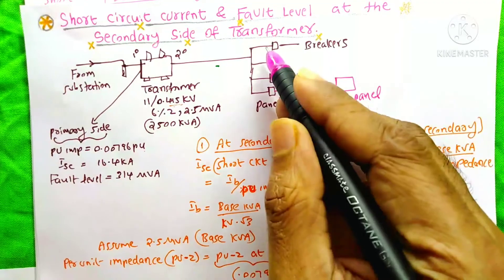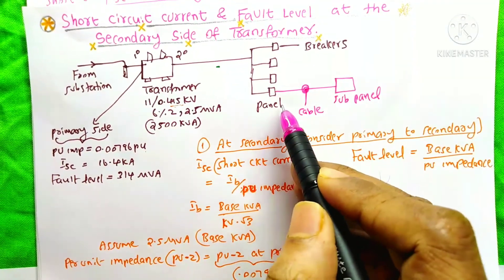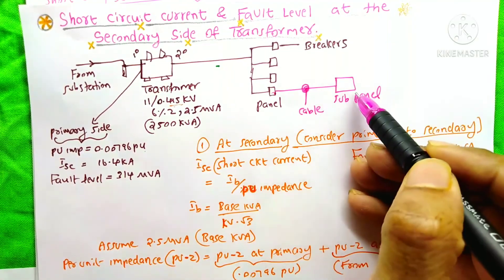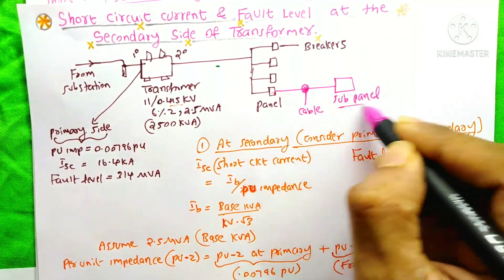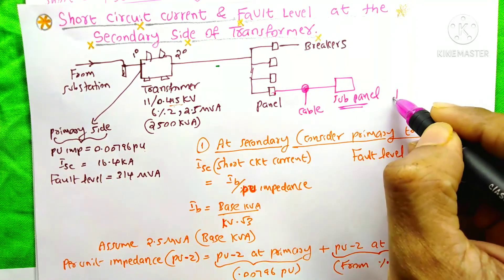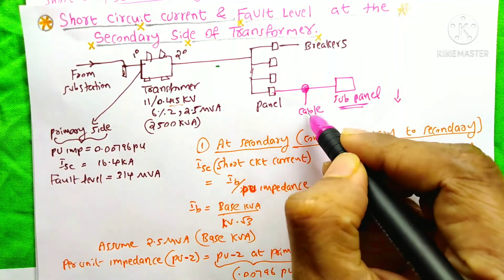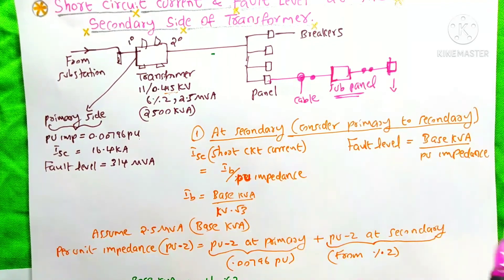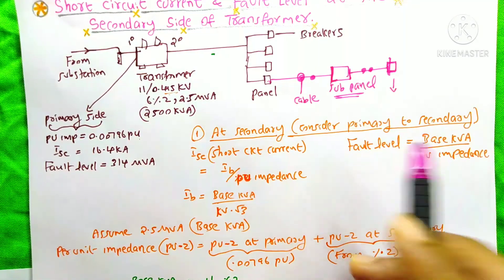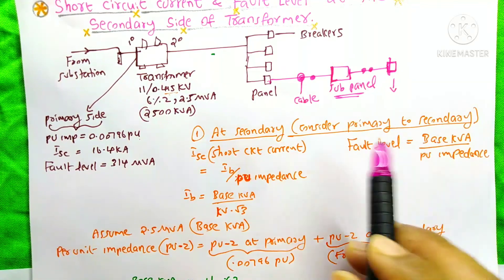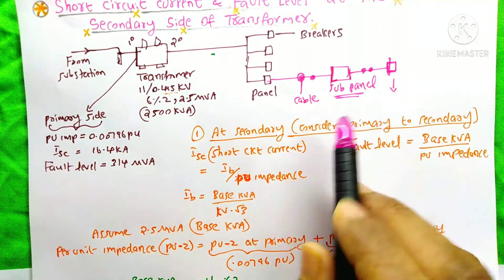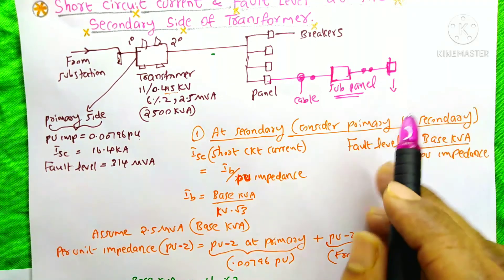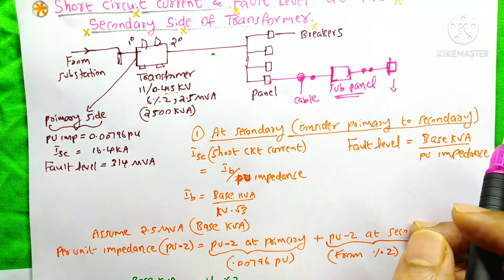These are all the breakers. If we connect any subpanel to this breaker, you will notice that the short circuit current and the fault level at that subpanel will decrease due to the impedance of the cable. If you got any useful information from this video, please like my page and follow me on Facebook, or subscribe on YouTube and press the bell icon — it will be a great motivation for me. Thanks for watching.